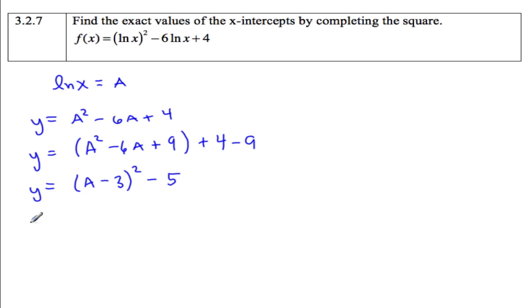Okay, so now I'm going to substitute a back in. So that's ln(x) minus 3 squared minus 5, and I can start solving for x.